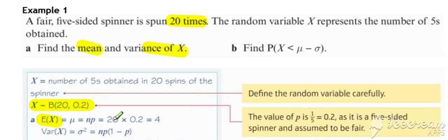So expected value mean is equal to n times p, 20 times 0.2, which is 4. The variance of X is np times 1 minus p, so 20 times 0.2 times 0.8, 3.2.